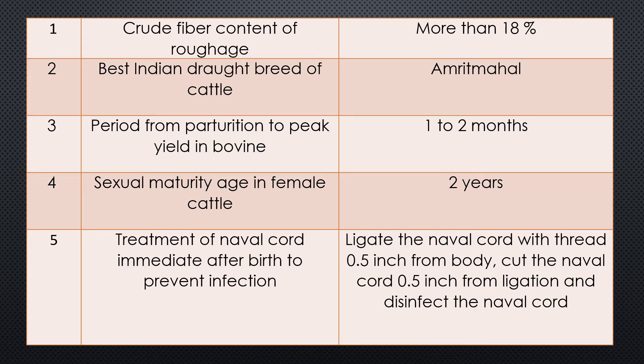Question four: Sexual maturity age in female cattle. In cattle, sexual maturity is generally attained at the age of two years. In buffalo it is six months to one year more. But in cow it is much more economical than buffalo — two years.